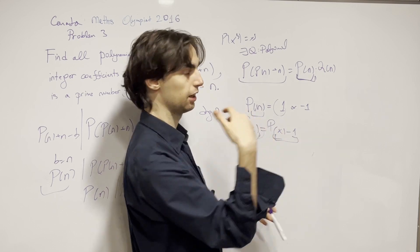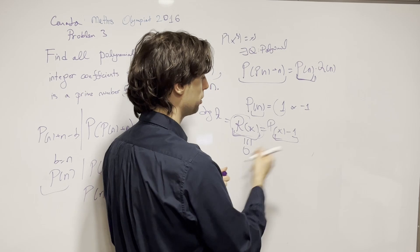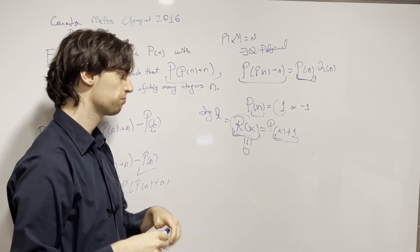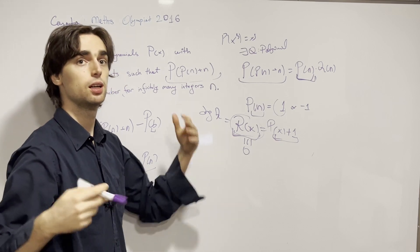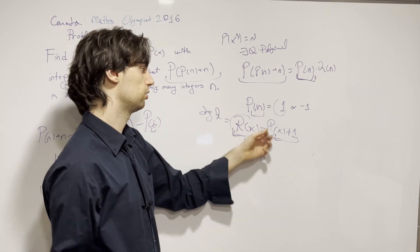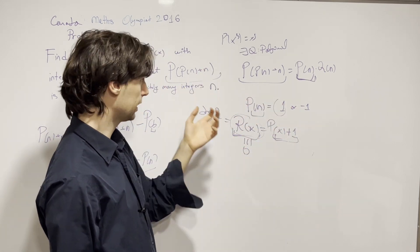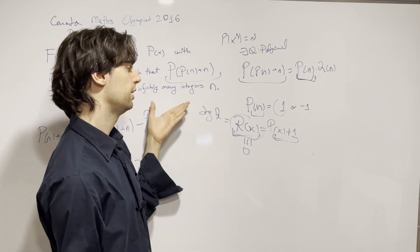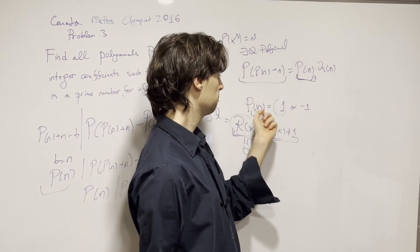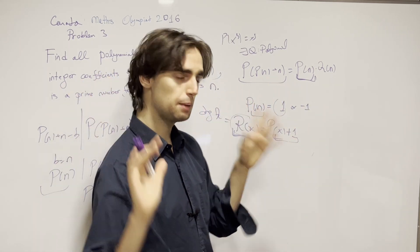But if P(x) is identically 1, then the problem statement doesn't hold. Similarly, if P(n) is −1 infinitely often, then P(x)+1 has infinitely many zeros, so P(x) is identically −1, and again the problem statement doesn't hold. So P(n) = 1 or −1 can only happen finitely many times.